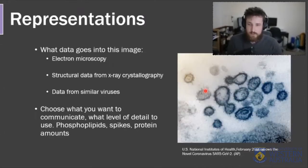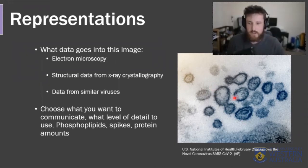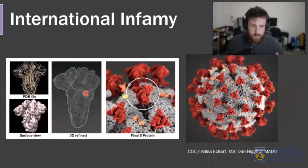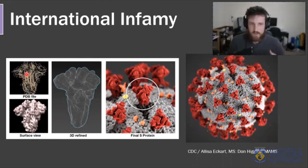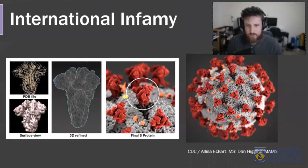How did they build this image? It's underpinned by robust structural information — electron microscopy showing viral particles, spikes on the outside. They use structural data from crystallography and data from similar viruses. But you need to think about what you want to communicate. Showing raw structural data to the general public isn't useful — too busy. So they take the surface view, clean it up, make it simpler. That gives you the resultant spike protein you see in the coronavirus image.